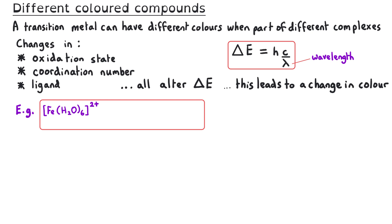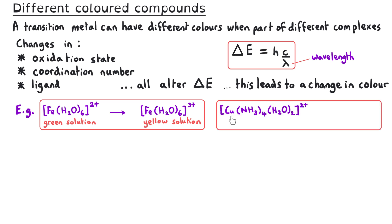For example, the hexa aqua iron 2 complex will be a green solution, but if the oxidation state of the iron changes from +2 to +3 with no change to the ligand, the colour will change to a yellow solution. As a second example, a copper 2+ complex with 4 ammonia ligands and 2 water ligands will appear as a dark blue solution, but if all 6 of those ligands are substituted for 4 chloride ligands, this change to the coordination number and ligand will lead to the complex having a yellow-green colour.